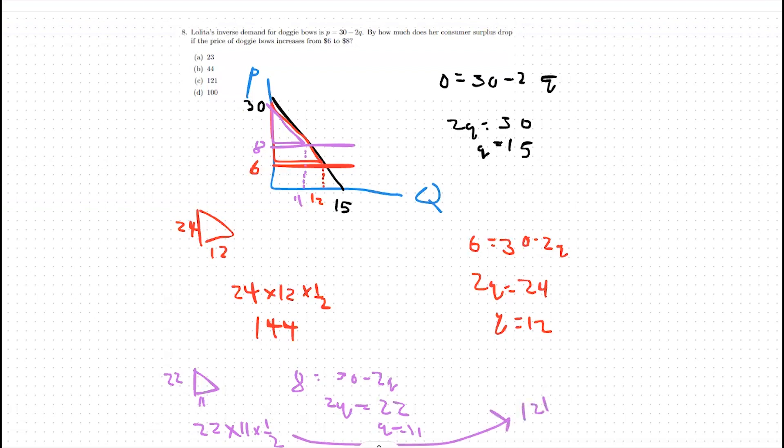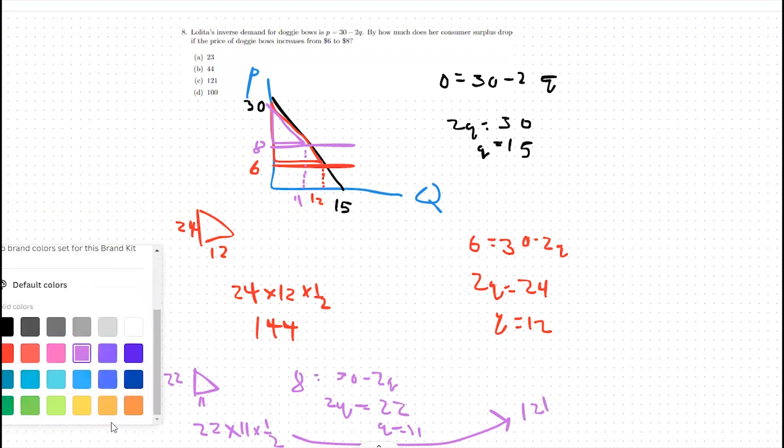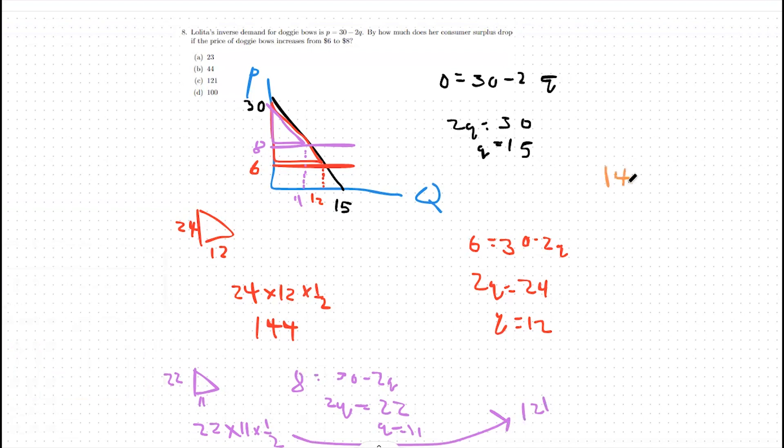Okay, then for our last step, we're going to find the difference between these two. So we're going to say 144 minus 121, which will be 23. So we have a difference of 23 in our consumer surplus between our $6 price and our $8 price.